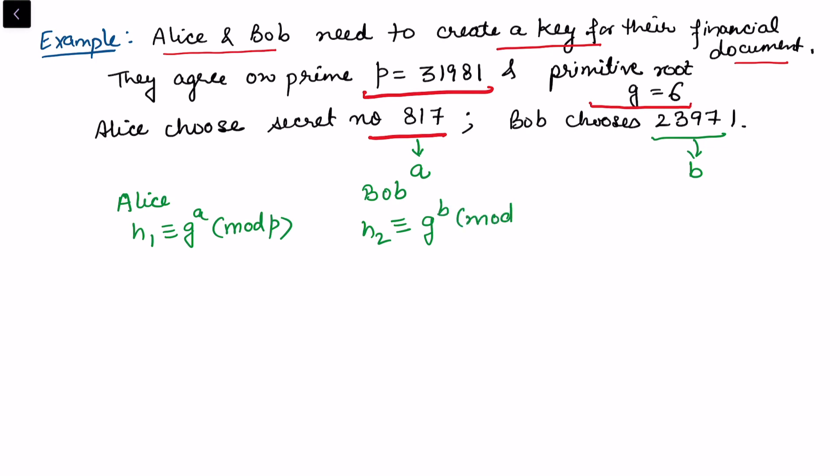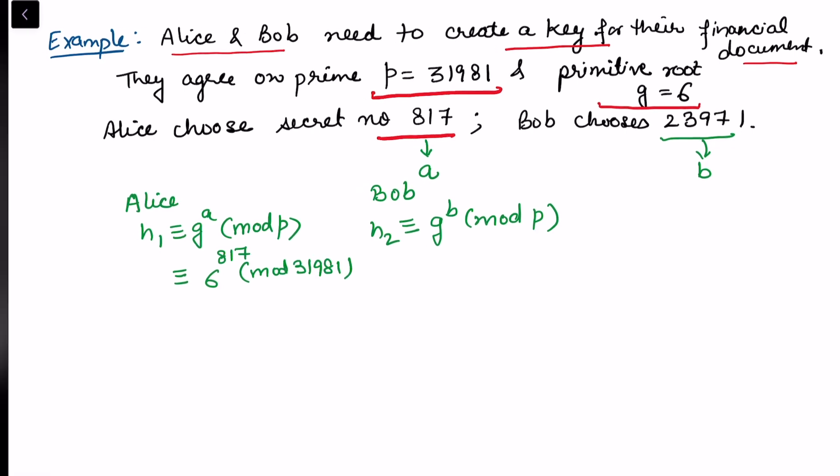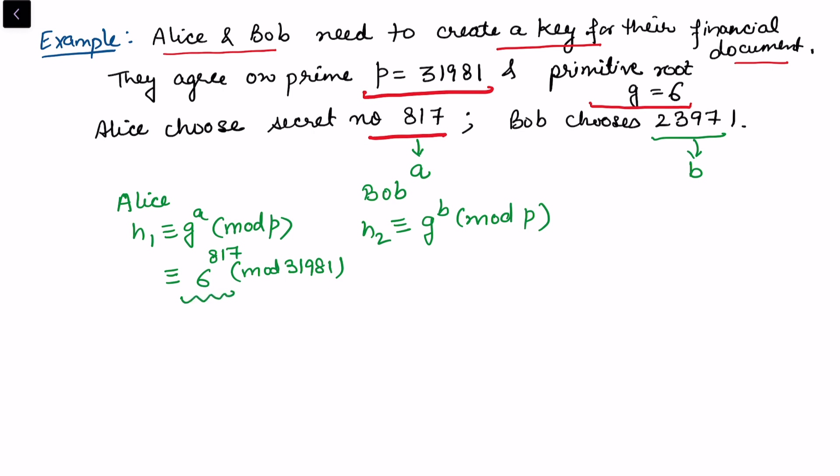They will exchange their h1 and h2. g is 6 and a is 817 with respect to mod 31981. We require to compute this expression, and as the integers go larger, this calculation becomes difficult. Alice calculates 16978.